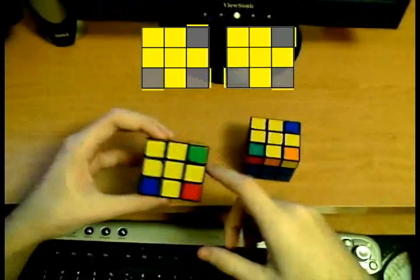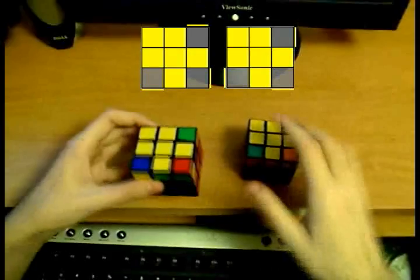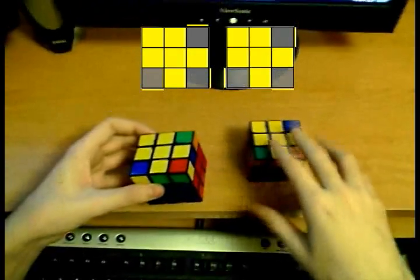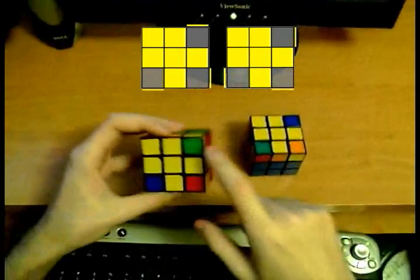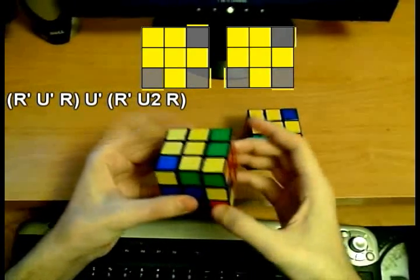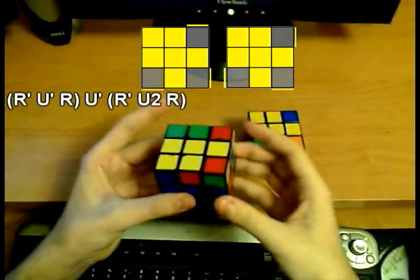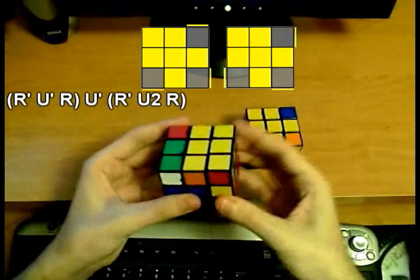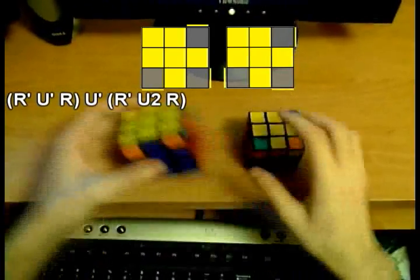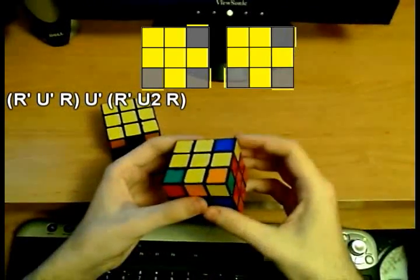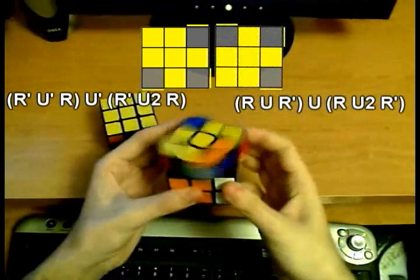Anyway, to solve the anti-sune—by the way, they have names, don't ask me why—to solve the anti-sune, I hold it like so and do R' U' R U' R' U2 R. To solve the sune, I hold it like this and I do R U R' U R U2 R'.